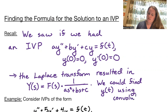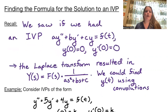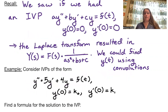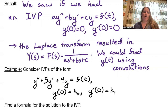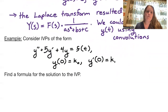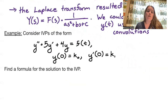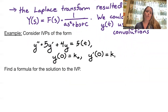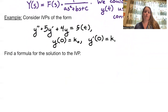Now we are going to do something slightly broader. Instead of having zero initial conditions, we will have general initial conditions: y(0) = k₀ and y'(0) = k₁. We'll consider IVPs of the form y'' + 5y' + 4y = f(t), with unknown f(t), and our job is to find a formula for the solution.